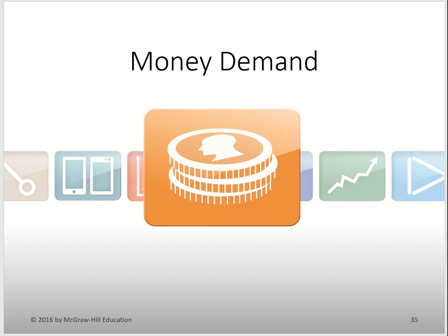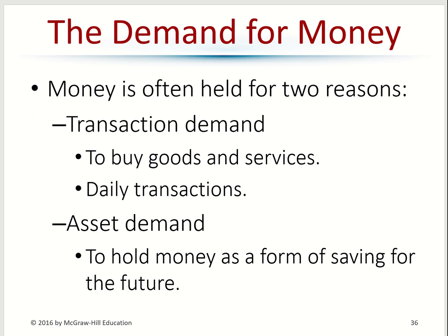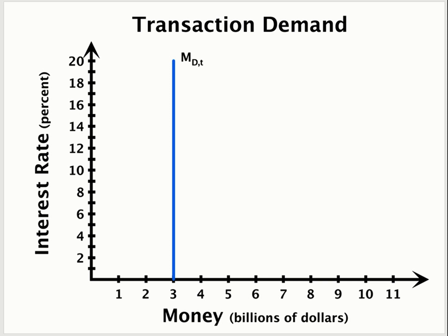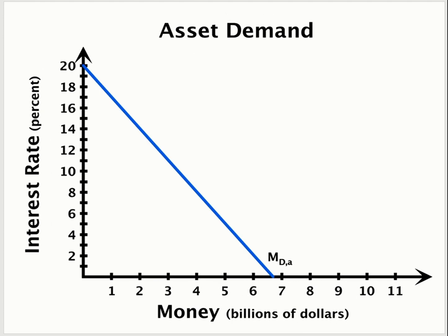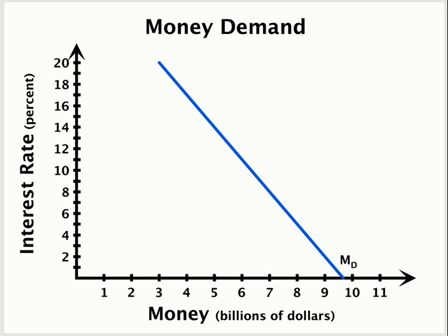Now let's look at the demand for money. Demand for money comes from two sources: transaction demand and asset demand. Transaction demand is money used to buy goods and services — money used for everyday transactions. Asset demand is the demand for money for investment purposes. Transaction demand is independent of the interest rate; you just need money to buy groceries. But asset demand depends on the interest rate — if interest rates are high, you need less money held; if low, you might hold more. So overall demand for money is downward sloping.